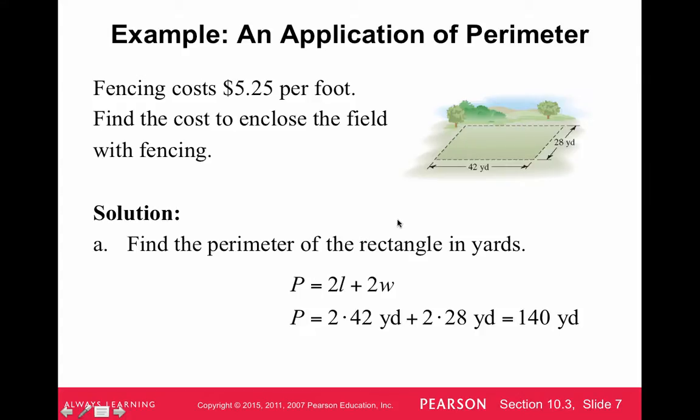So they're calling it a rectangle. I guess it doesn't really matter if it's a parallelogram or rectangle here because the opposite sides are equal. So the perimeter is just the two 28s and the two 42s added up. So they show this formula. I'm not big on this particular formula because perimeter is always just add the sides all up.